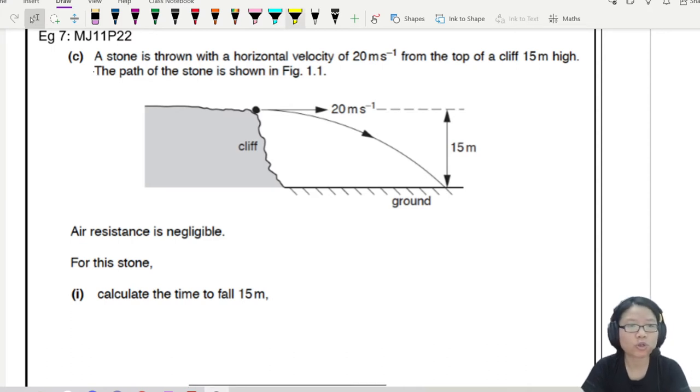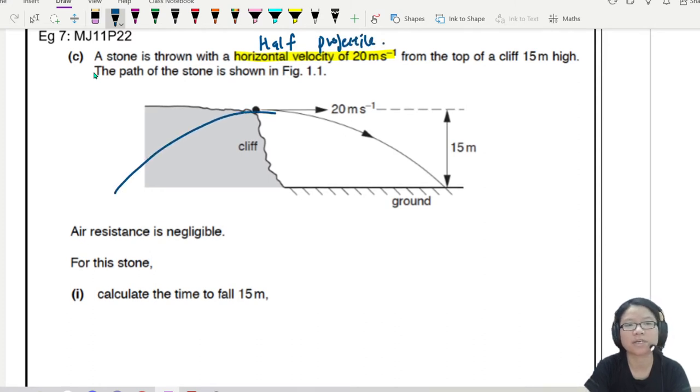We have a stone thrown with horizontal velocity of 20 meters per second. So this horizontal velocity means this is half a projectile. Your projectile is supposed to be like this, a parabola, but we're only dealing with half. So there's only a horizontal component. Air resistance is negligible.